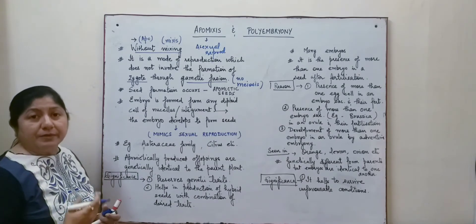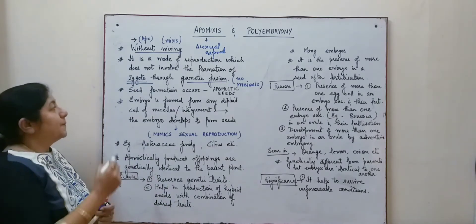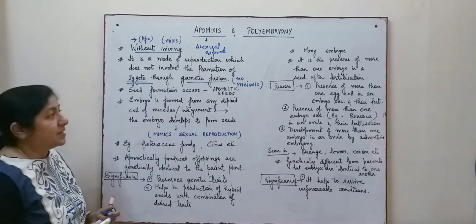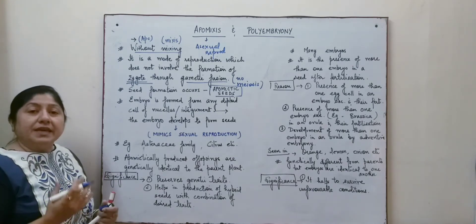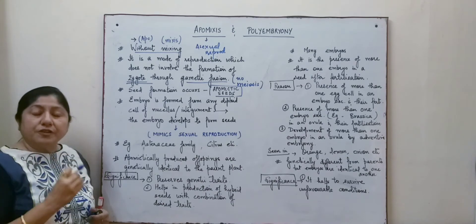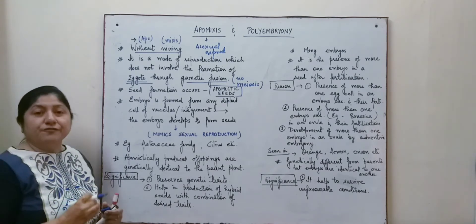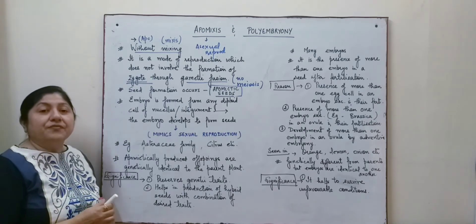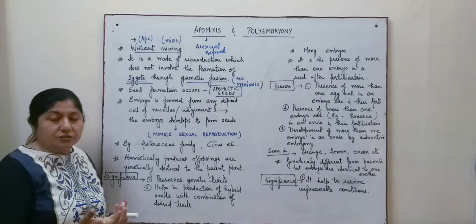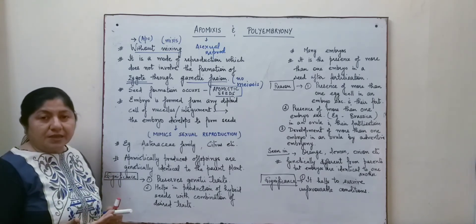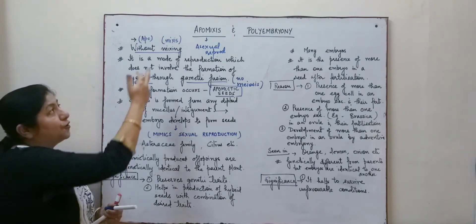Since there is no formation of the gametes by meiosis, zygote formation is also not there. But these plants do develop seeds — the seed formation takes place in these plants and they are known as apomyctic seeds. Apomixis is a process that occurs in sexually reproducing plants, and instead of actual fusion of the male and female gametes, there is no formation of gametes, no meiosis, no gamete formation, no fusion, and no zygote formation. So these plants are said to follow apomixis.